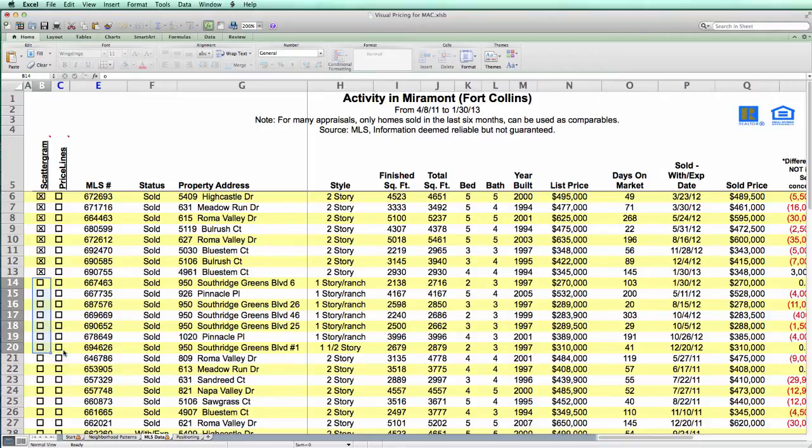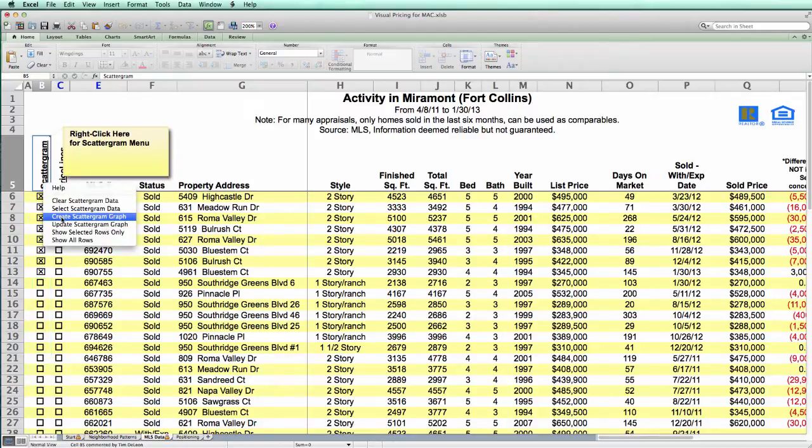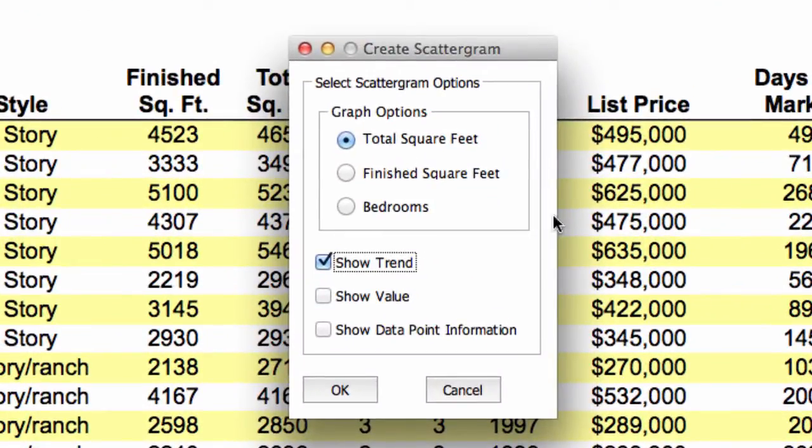Now to create your scattergram, position your cursor over the scattergram heading, and right-click and select the create scattergram graph option. Now you see there are several options that you can make use of when you create your scattergram. Most of these options are fairly straightforward.